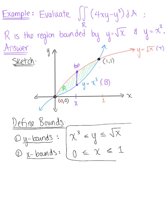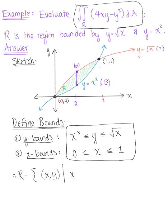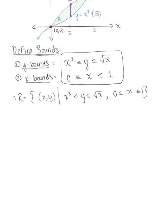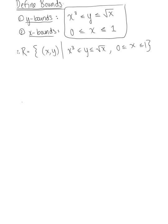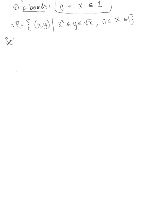And using these bounds and our given function here, we are ready to integrate. So we want to take this one step further. We can say that our region of integration, R, is the set of all ordered pairs (x, y) such that y is greater than or equal to x cubed but less than or equal to the square root of x, and then x is greater than or equal to 0, less than or equal to 1. And so we're ready to set up the integral and evaluate.